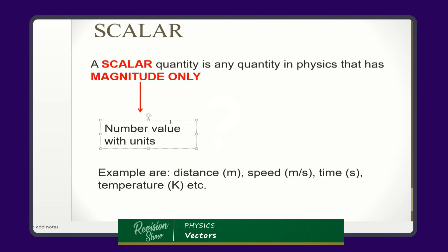So for example, distance. Distance is the interval between two fixed points — just the interval. We do not care which direction the interval is. All that matters to us is the interval between the two fixed points, and that is distance. Time — I have never heard anyone say that the time is 3 p.m. to the east or to the south. No.